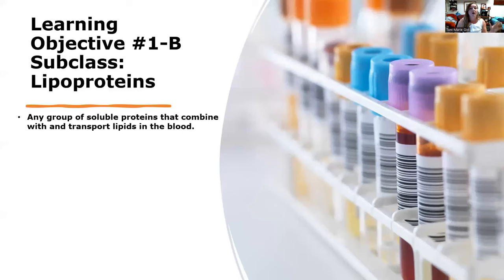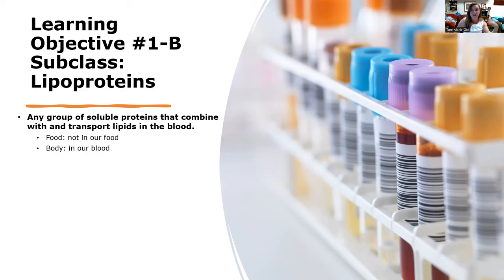The third subclass is lipoproteins — generally any group of soluble proteins that combine with a transport lipid in the blood. These are lipids that are moving things throughout the blood with a protein component. We do have lipoproteins in our body, but we do not consume lipoproteins in our food. So if you're consuming a typical American diet and you're not consuming blood as an ingredient, you are not consuming any lipoproteins.